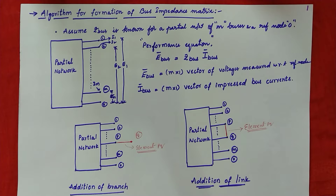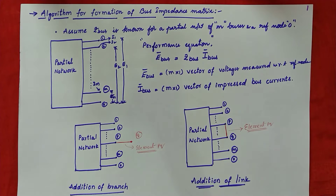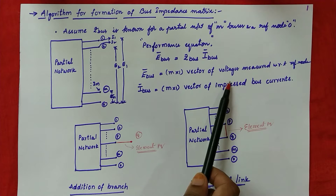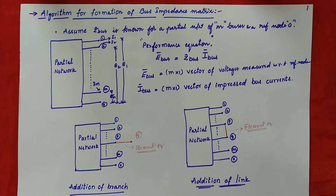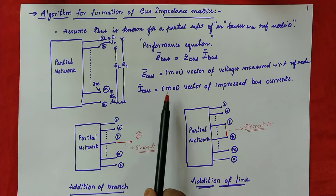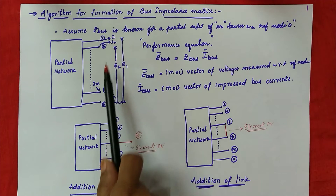Today in this class we are going to discuss the performance equation using Z bus, and study the algorithm for the formation of the bus impedance matrix. The performance equation in the bus frame of reference is E_bus equal to Z_bus into I_bus, where E_bus is an M by 1 vector of voltages measured with respect to reference — that means E1, E2, and so on EM. Similarly, I_bus is also an M by 1 vector of impressed bus currents: I1, I2, and so on IM.